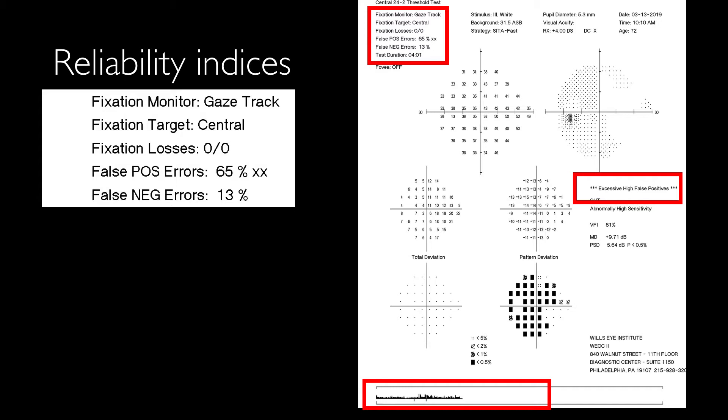Right below the gray scale we have a message which is some sort of interpretation of the reliability indices that we have at the top box, and at the bottom part of the visual field test we have the gaze graph.